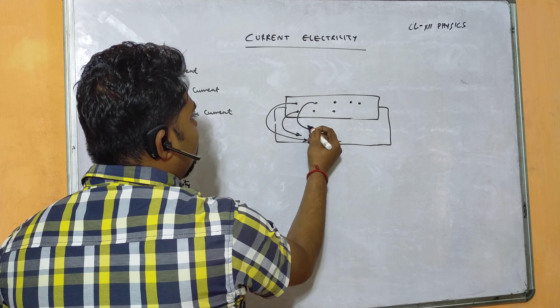Thermal velocity is very large and is of the order of 10⁶ meters per second. It increases with increase in temperature. However, since electrons move in all random directions with no net flow, the average thermal velocity through a given unit area is always zero.